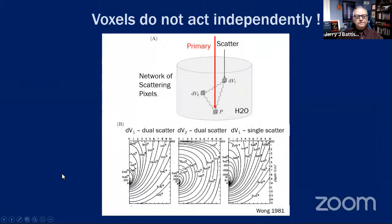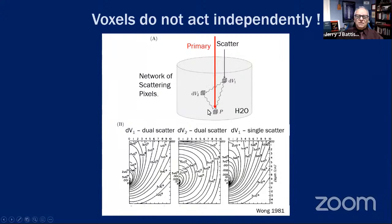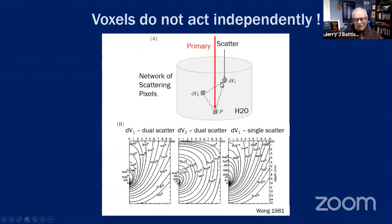An important message: voxels do not interact independently. It is really a network of scattering voxels — scattering can take place from one site to another and then on to the point of interest. Plots by John Wong show how much energy is deposited at point P that came indirectly through scattering sites. Although the primary is dominant — usually about 80 percent of the dose — the 20 percent from scatter cannot be ignored. A three-dimensional scatter problem requires a three-dimensional solution.